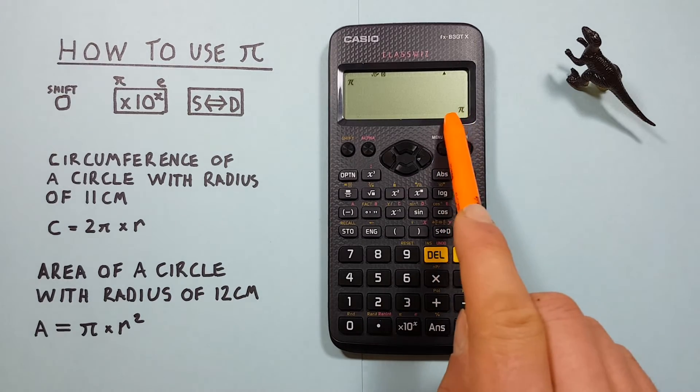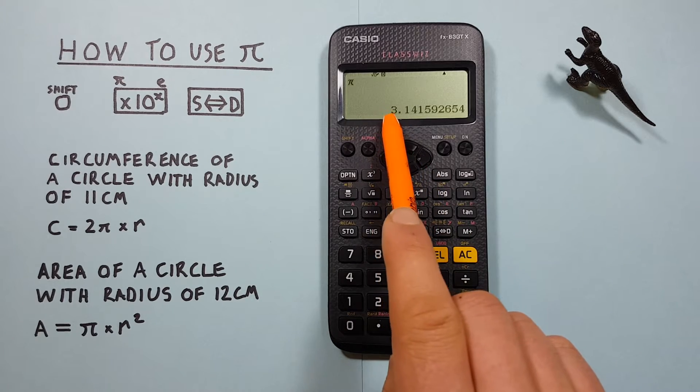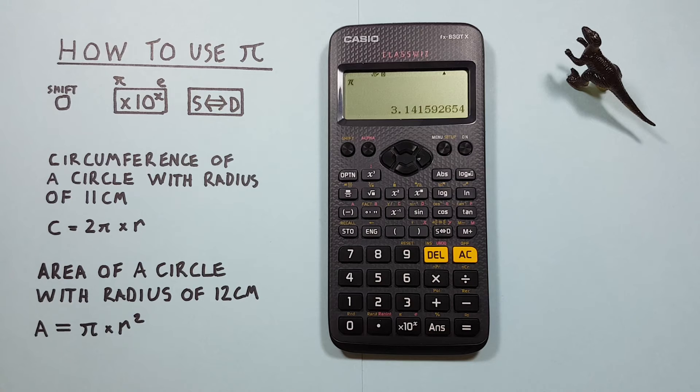And we can get the decimal for that by pressing the S to D key. There we see it's converted to 3.14159 etc. And we can get it back by pressing the S to D key again.